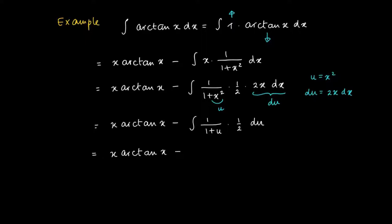a primitive of 1 divided by 1 plus u is the ln of the absolute value of 1 plus u.